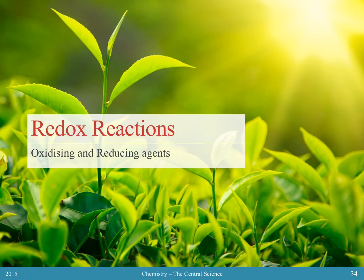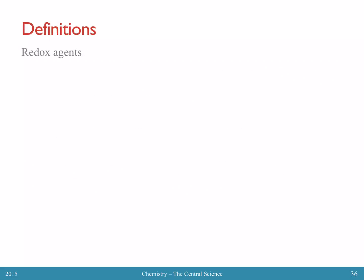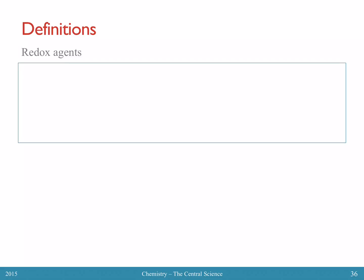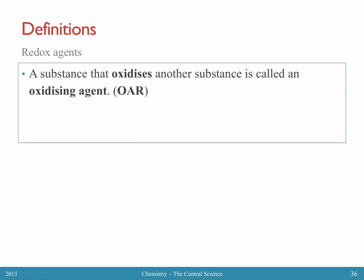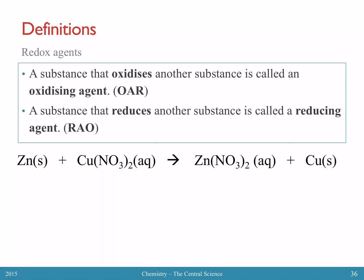Welcome back. This is the second video for redox reactions on oxidizing and reducing agents. A recall note: redox cannot occur simply on its own — oxidation must always occur with reduction and vice versa. So what are redox agents? Something that oxidizes another substance will be called an oxidizing agent; something that reduces another substance is called a reducing agent.